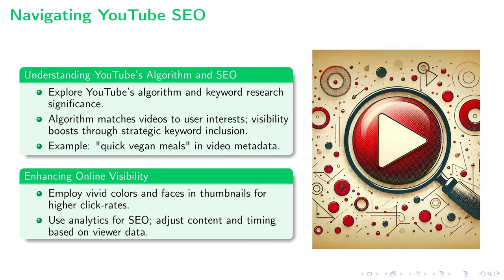Unlocking YouTube's algorithm is the first step to a successful channel. It acts like a matchmaker pairing videos with viewers' interests by scanning metadata — the underlying keywords in your content. For example, if a video is about quick vegan meals, the right keyword planning makes it more likely to appear in users' search results and recommendations. Boosting your channel's visibility involves more than just excellent content; the coveted click often boils down to the appeal of your thumbnail — alluring images with vivid colors and faces have the power to draw attention, turning passive scrollers into potential viewers.